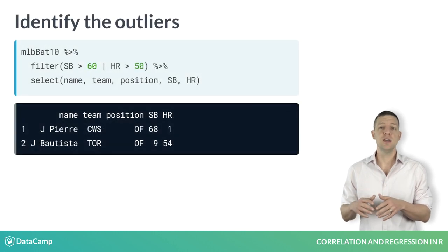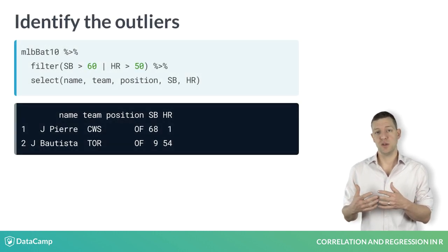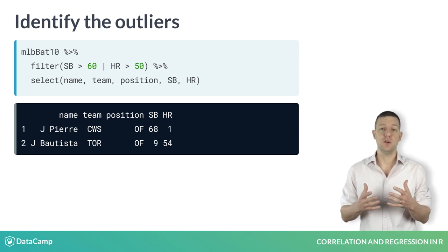In this case, we can use the filter function to identify those players with at least 60 stolen bases or at least 50 home runs.